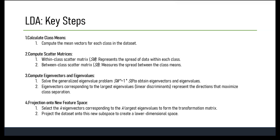Then we have SB, the between-class scatter matrix. It measures the spread or separation between different classes and is calculated by considering the difference between the class means. This matrix quantifies the separation between different classes by analyzing the distance between their mean vectors.